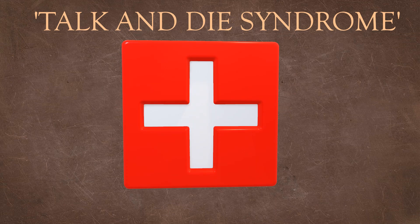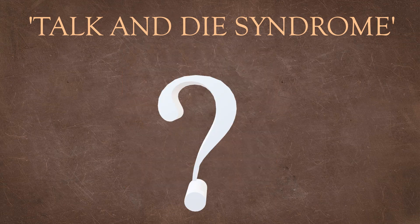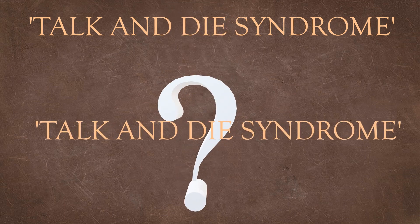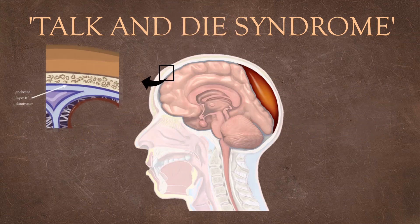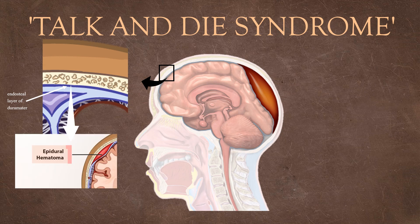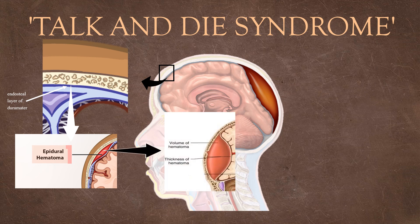It truly is a medical emergency. You must be wondering: why is it called Talk and Die Syndrome? Normally, the endosteal layer of the dura mater is closely attached to the under surface of the skull, making the epidural space only a potential space. However, the initial trauma causes secondary dural stripping from the under surface of the skull, which is further widened by pressure from the ruptured artery, so blood collects in this epidural space.